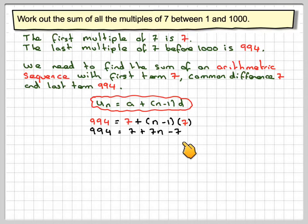So you get 994 is equal to 7, 7n minus 7, obviously the 7s cancel out, and therefore n will be 994 divided by 7, which is 142, which you could have done, but like I said, it's better to do it this way if the common difference and the first term are not the same.